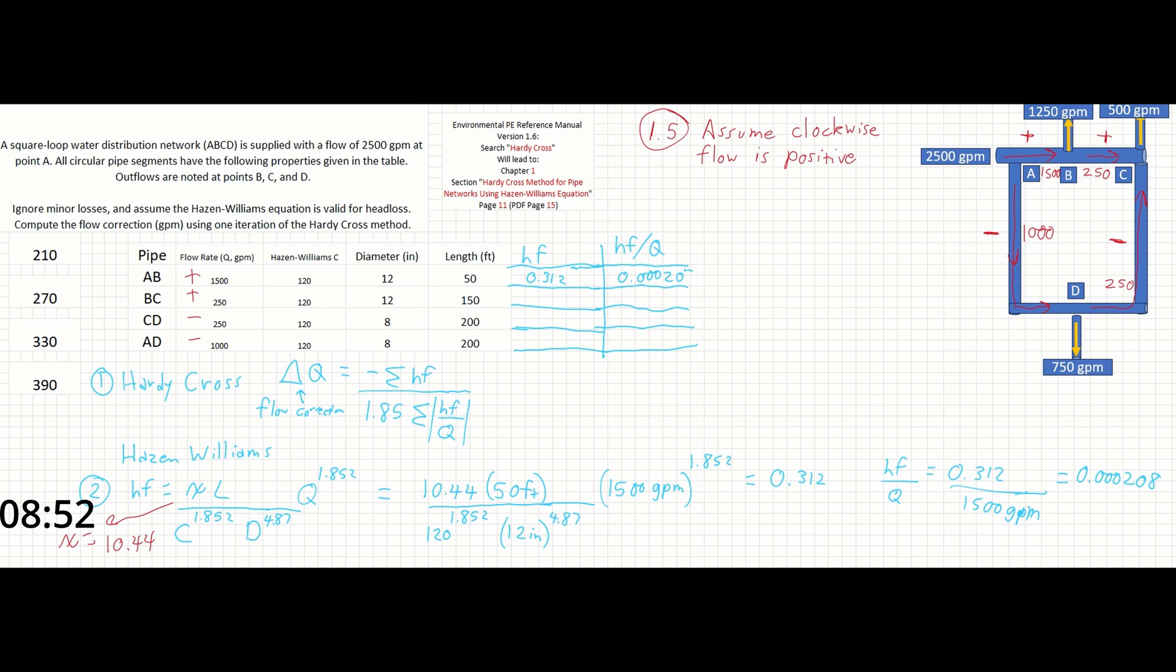The next step would be to solve the Hazen-Williams equation for head loss and head loss over Q for terms BC, CD, and AD as well. To save time in the video, I'm going to write down the next term's answers here. If you'd like, you can pause it and calculate them yourself before I fill them in.